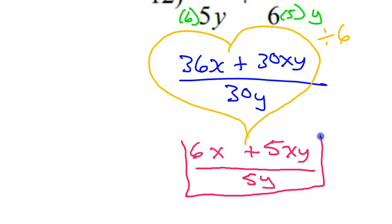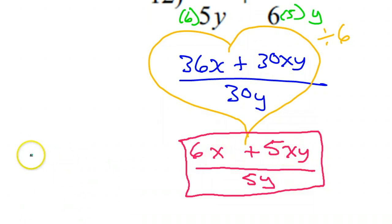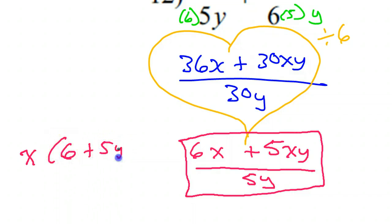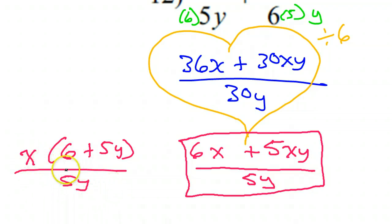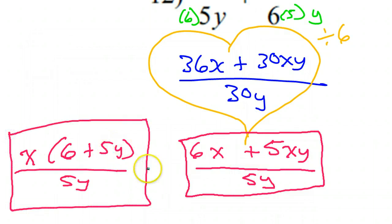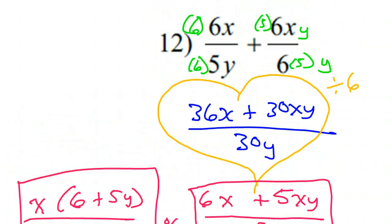Yes, there's still a GCF in the numerator — they're both sharing x. So yes, I could pull out the x and have x times (6 plus 5y) over 5y. But since nothing will cancel, I might as well have left it like this. I would accept either answer. That was number 12.